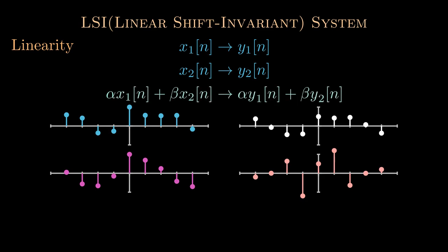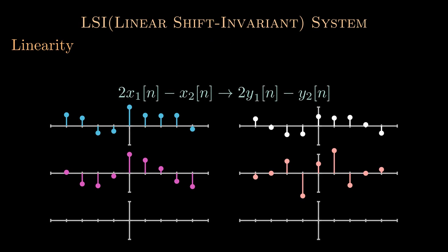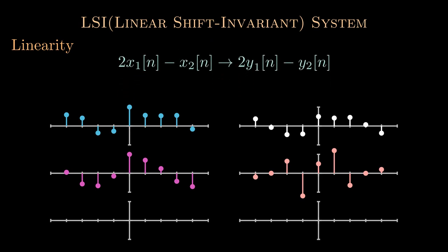Let's take an example where alpha is equal to 2 and beta is minus 1. So if we give a signal twice x1[n] to the system, we will essentially get twice y1[n] as output. It is the general case where alpha is 2 and beta is 0.